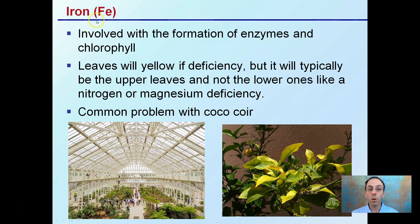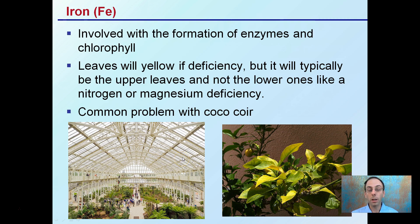Moving on to iron, represented by Fe, it's involved in the formation of enzymes and chlorophyll. Leaves will yellow if deficient, but it will typically be the upper leaves, not the lower ones like with nitrogen or magnesium deficiency. This citrus plant image illustrates how it's the upper leaves that are yellowing. Iron deficiency is a common problem with coco coir simply because of some of the properties of that particular media.